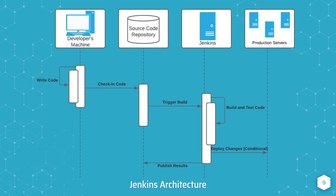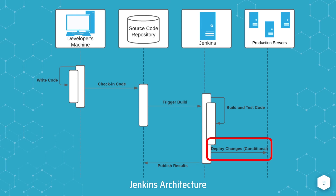Once a build is triggered in Jenkins, Jenkins will pull the developer's code changes down to its local workspace, where it will build and test the code automatically using the latest version of the codebase. If the automated build and test steps complete successfully, Jenkins will automatically deploy those changes to the production environment. If the build and test steps fail, the automated deployment will not happen. Regardless of whether the build passes or fails, Jenkins will still publish results to the source code repository.